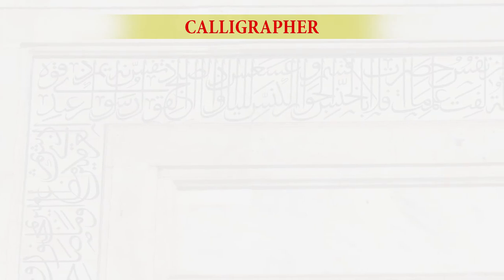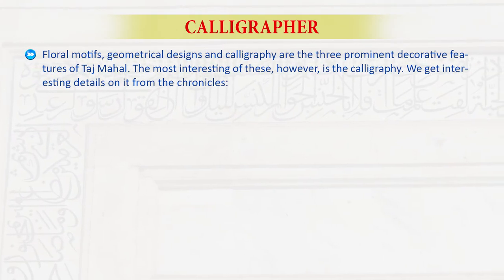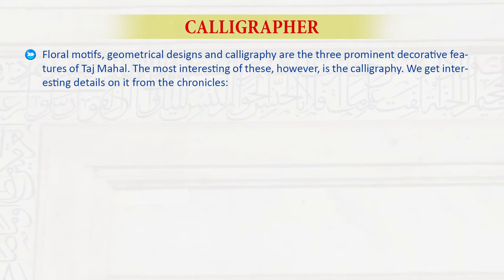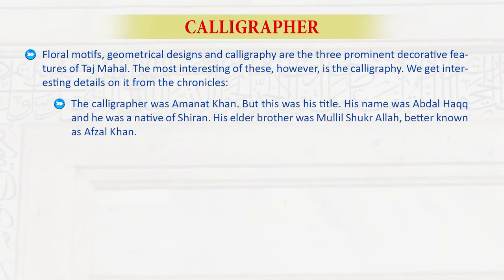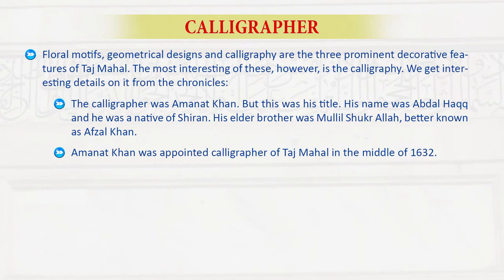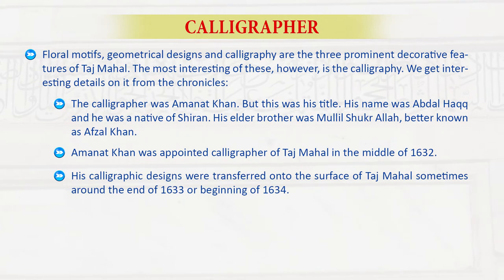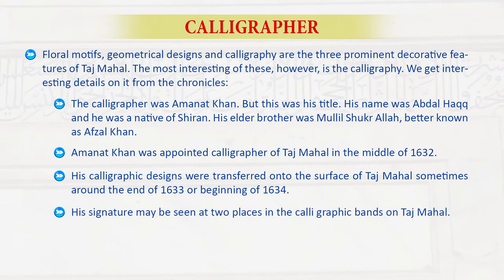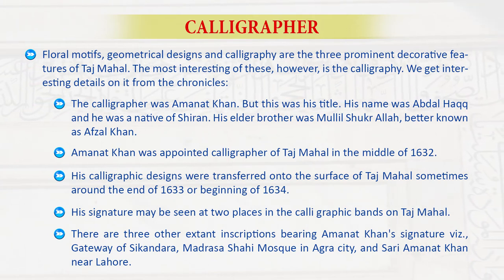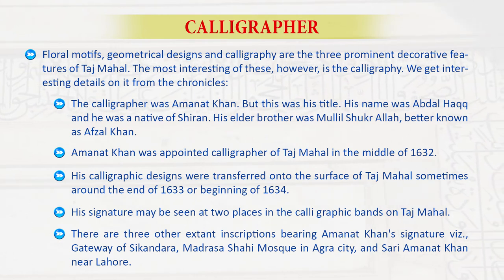The floral motifs, geometrical designs, and calligraphy are the three prominent decorative features of Taj Mahal. The most interesting of these is the calligraphy. The calligrapher was Amanat Khan — but this was his title. His name was Abdul Haq and he was a native of Shiraz. His elder brother was Mullah Shukrullah, better known as Afzal Khan. Amanat Khan was appointed calligrapher of Taj Mahal in the middle of 1632. His calligraphic designs were transferred onto the surface of Taj Mahal around the end of 1633 or the beginning of 1634. His signature may be seen at two places in the calligraphic bands on Taj Mahal. There are three other extant inscriptions bearing Amanat Khan's signature: the Gateway of Sikandra, the Madrasa Shahi Mosque in Agra city, and Sarai Amanat Khan near Lahore.